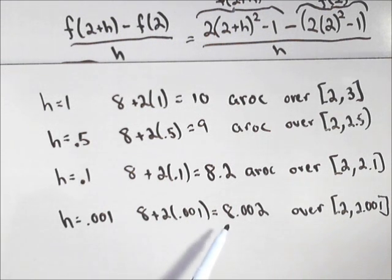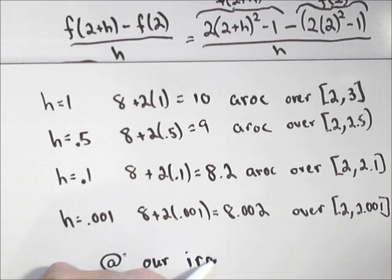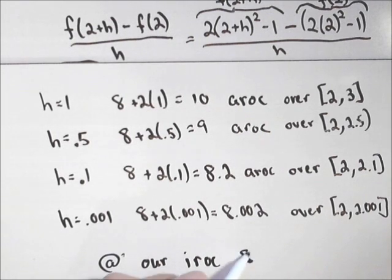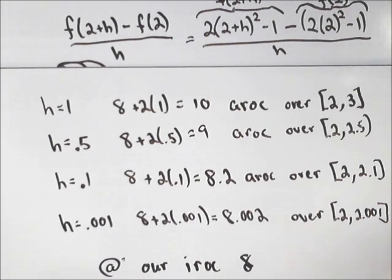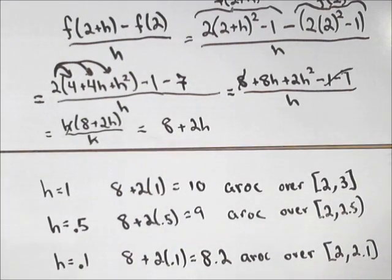Our instantaneous rate of change would be 8. You can kind of see that by plugging a 0 into what we found from the difference quotient.